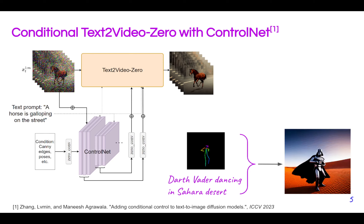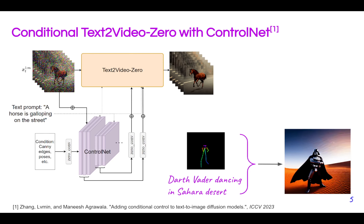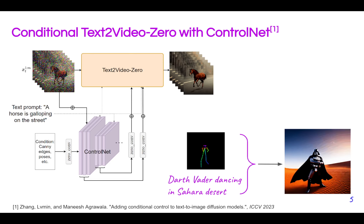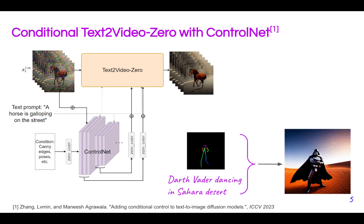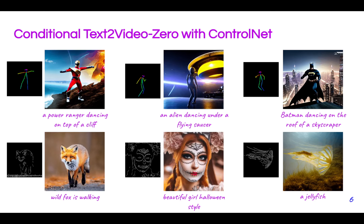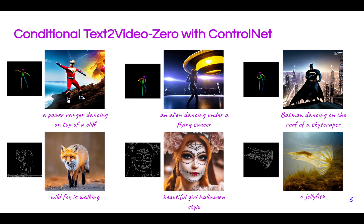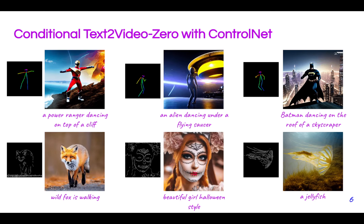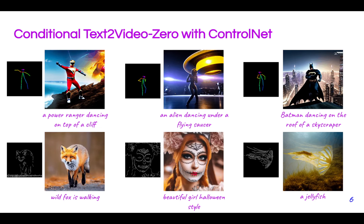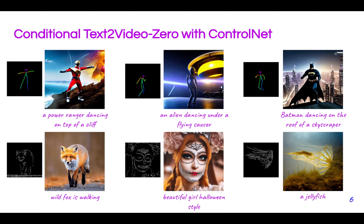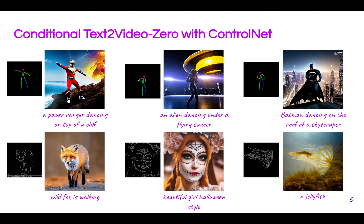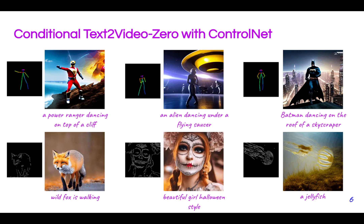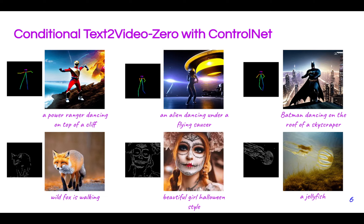Additionally, we combine our approach with ControlNet by conditioning on poses, canny edges, etc. Pre-trained ControlNet branches are used without any training or fine-tuning. Here you can see more examples of conditional generation. Notice how aligned the generations are with the conditions, particularly for the canny edges how well the details are preserved.